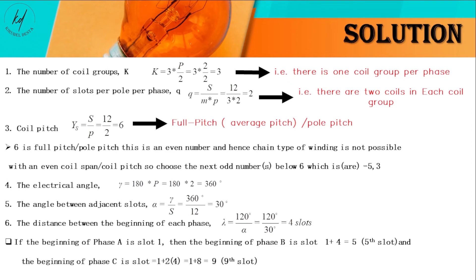Sixth, the distance between the beginning of each phase is the ratio of the phase shift angle between the three-phase power supply, which is 120 degrees, divided by the angle between adjacent slots, 30 degrees — giving 4. Each of the three phases is now 4 slots apart. If the beginning of phase A is slot 1, then phase B begins at slot 5, and phase C begins at slot 9.